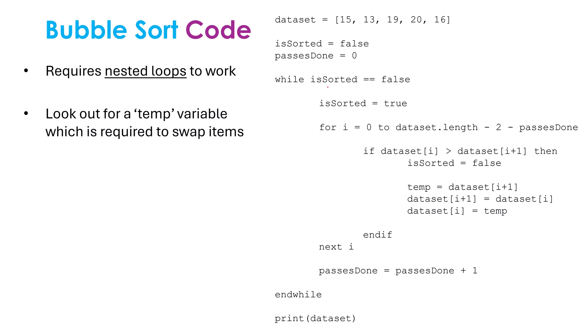Another key thing to look out for is a temporary variable, usually called temp, but not necessarily called temp. This is needed to swap items. So you can see this if statement is checking to see if the item at index i is bigger than the item at index i plus one. Is the item to the left bigger than the item to the right? Assuming we're putting it into ascending order, if it is, we need to swap those two items around. These three lines are how we do that. Okay, so why do I need to have this temp variable?